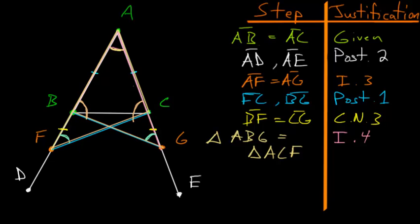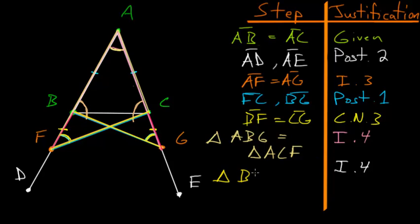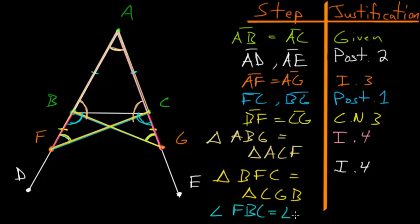Using Book 1, Postulate 4 again, we can show that triangles BFC and CGB are equal, because BF equals CG, FC equals BG, and the angles between those two lines are equal. Therefore triangle BFC equals triangle CGB. From this, we immediately know that angle FBC equals angle GCB.